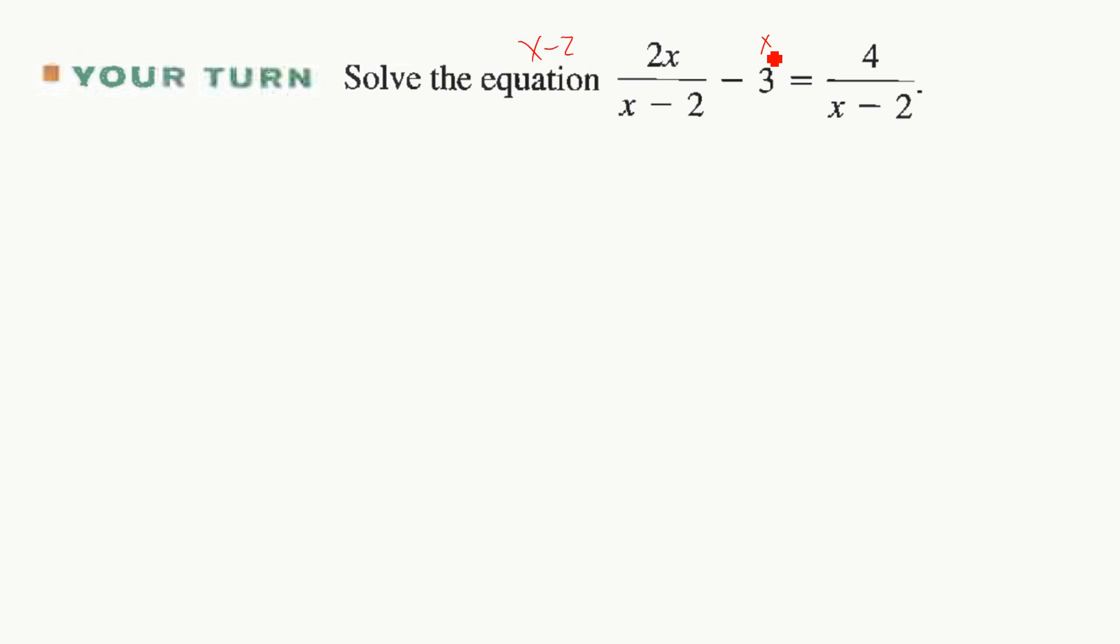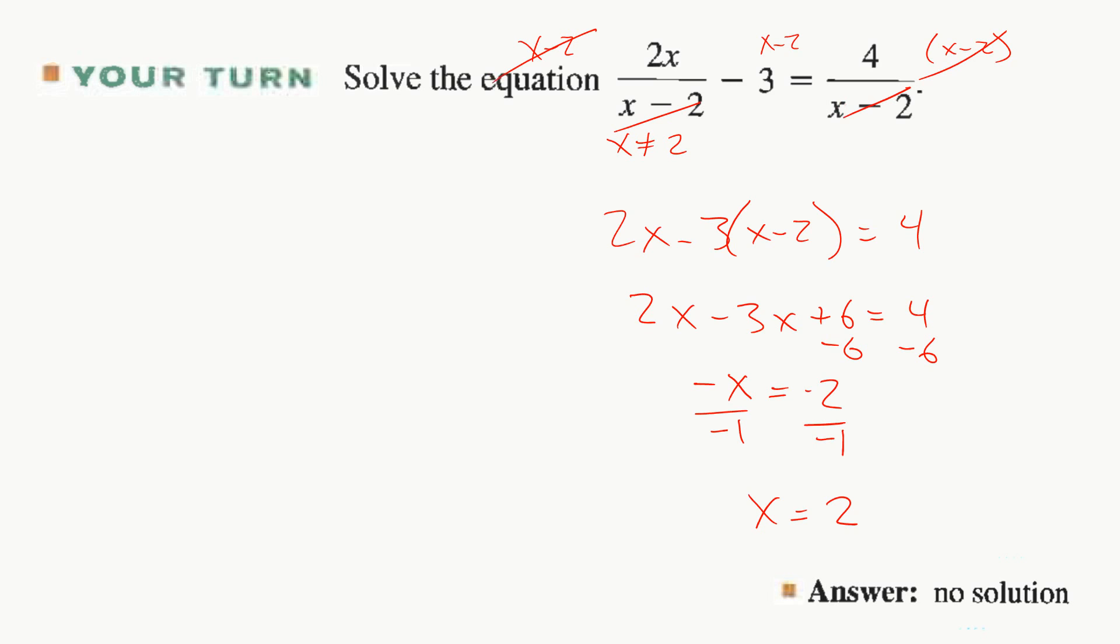Most common denominator would be x minus 2. Cancel, cancel. We have 2x minus 3x minus 2 equals 4. So 2x minus 3x plus 6 equals 4. So we will have 2x minus 3x plus 6, we will end up with negative x equals negative 2. Divide by negative 1, x equals 2. But from up here, we would say x cannot equal 2 because 2 minus 2 is 0. So 2 is an extraneous solution. No solution is our answer.